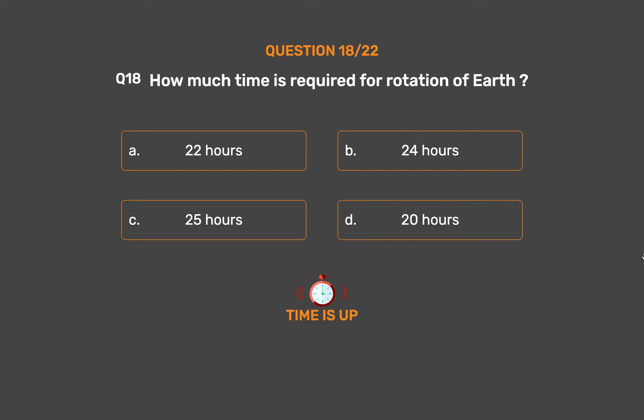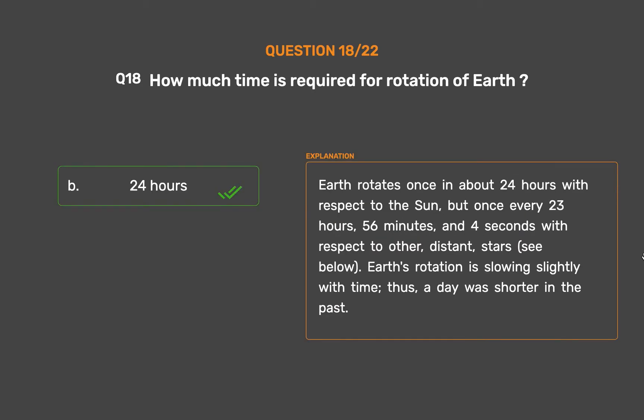The correct answer is Option B: 24 hours. Earth rotates once in about 24 hours with respect to the sun, but once every 23 hours, 56 minutes, and 4 seconds with respect to other distant stars. Earth's rotation is slowing slightly with time; thus, a day was shorter in the past.